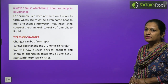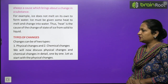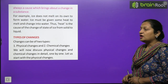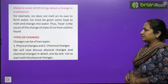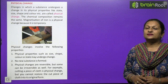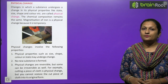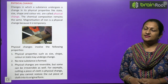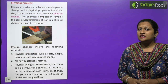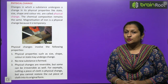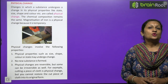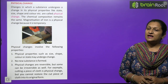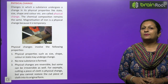In this chapter we will study two types of changes: physical change and chemical change. Physical changes take place in the physical state, color, and size of a substance. Physical changes are mostly temporary and reversible. There is no change in the chemical composition of the substance.